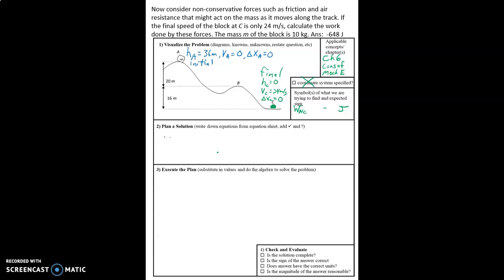Alright, so now let's look at our plan. And I did not draw in my gravitational potential energy reference line, so I'll go ahead and put that in now. That's where h equals zero.